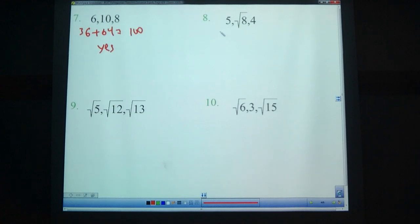Number 8. 5 squared is 25. Square root of 8 squared is 8. 4 squared is 16. And 8 plus 16 equals 24, which does not equal 25. So that is not right. No.